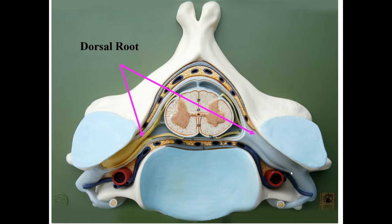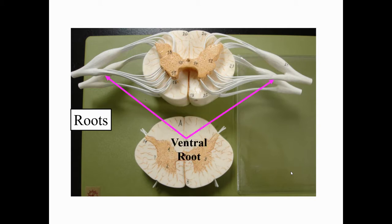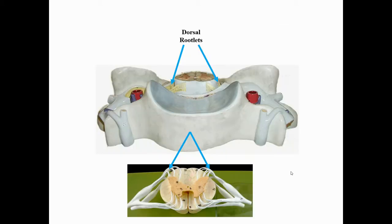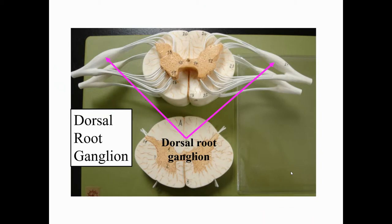Moving toward the spinal cord from the nerve, a split occurs and we get two roots: a dorsal root and a ventral root. Getting even closer to the spinal cord, they divide into smaller divisions called rootlets. On the dorsal root you'll notice an enlarged area — this is the dorsal root ganglion, which gives us one more way to tell anterior from posterior. You can see this on the small model, and it helps confirm which side is dorsal or posterior.